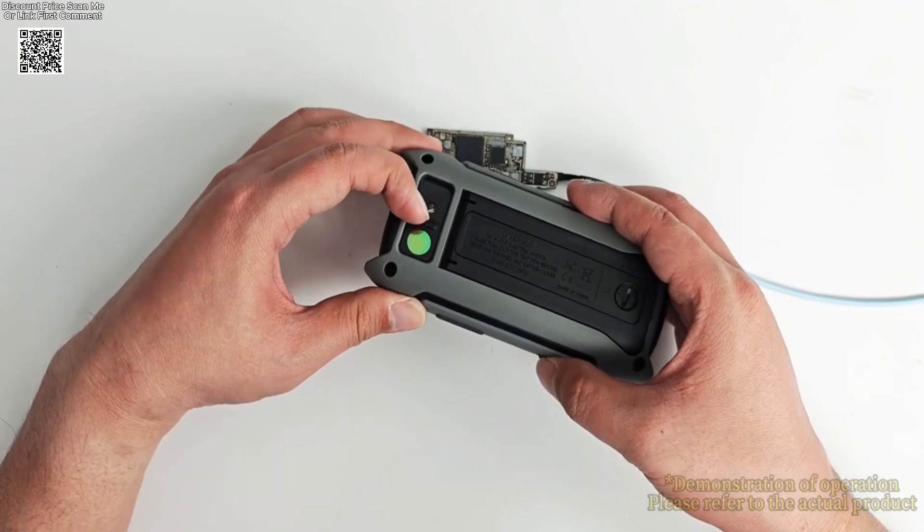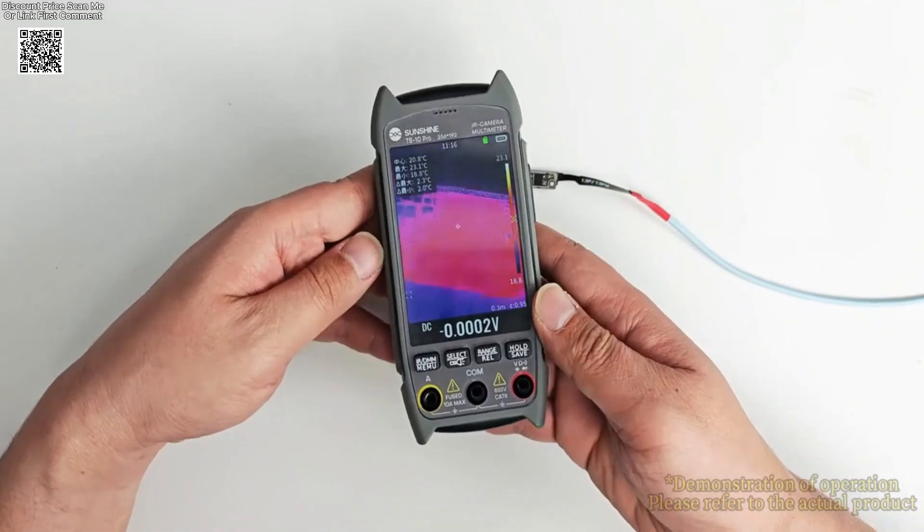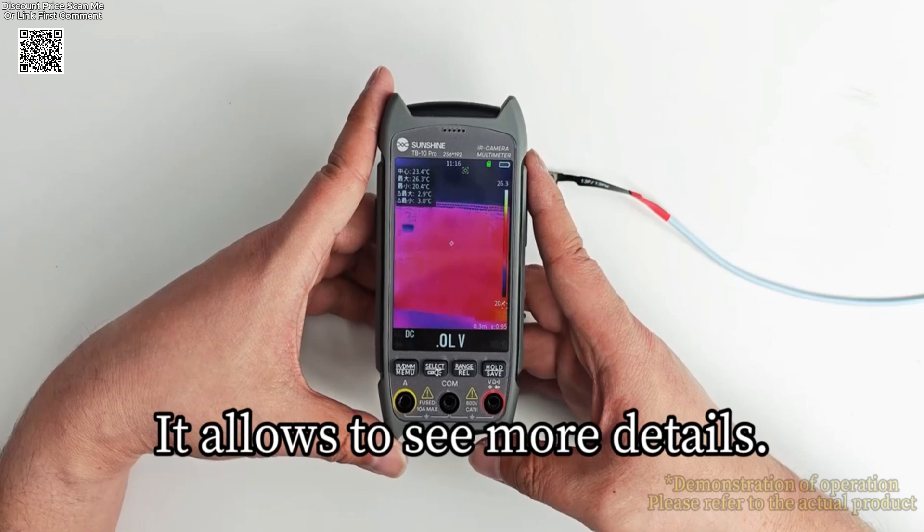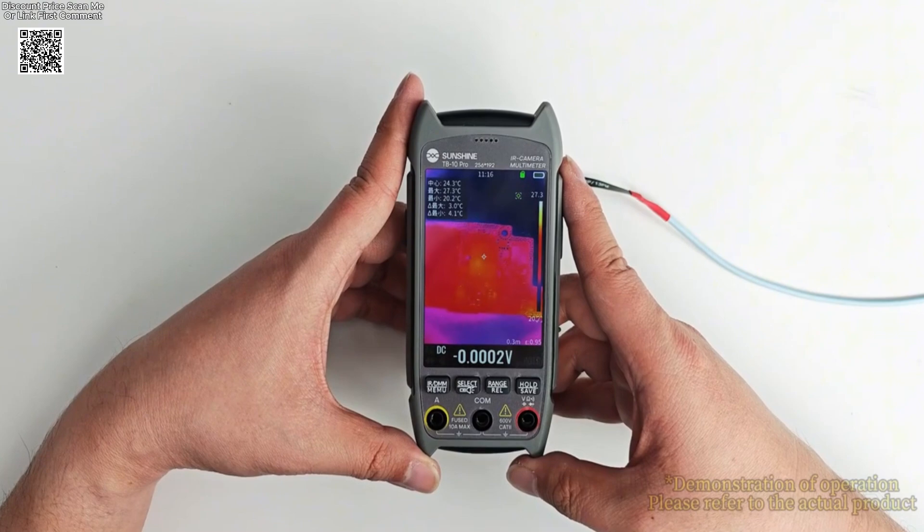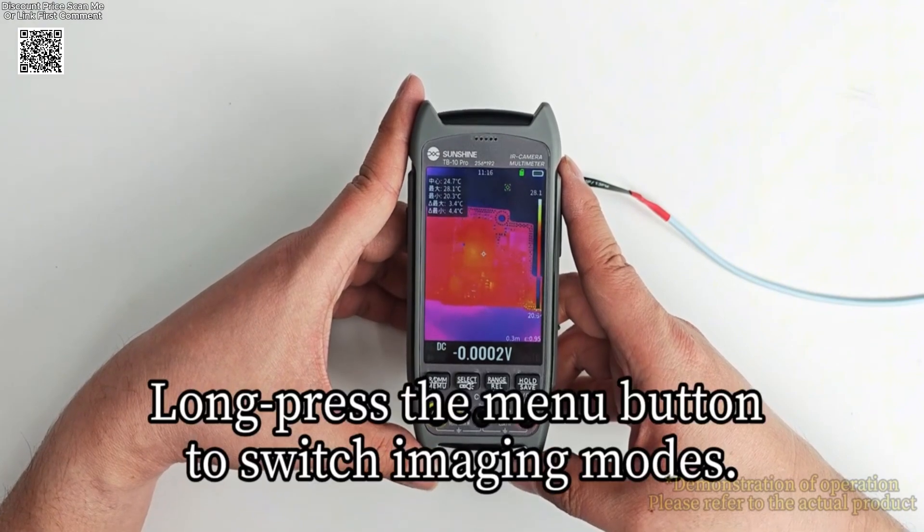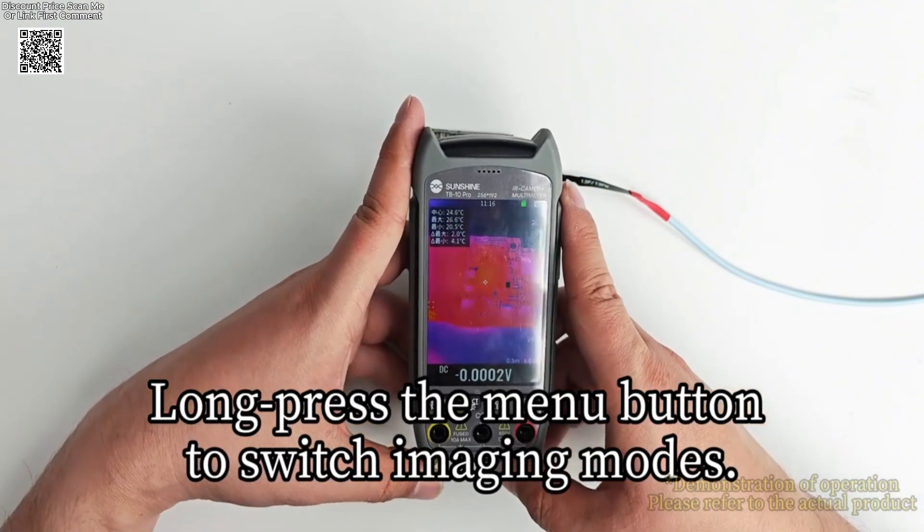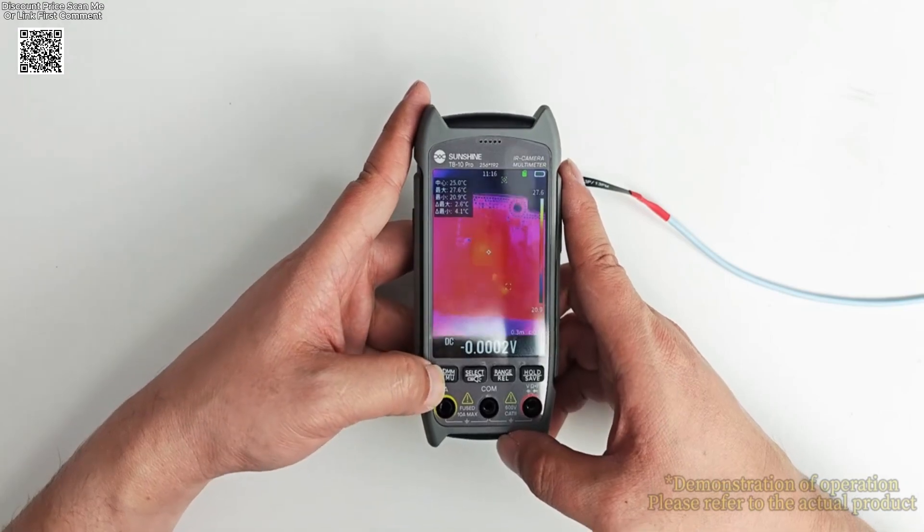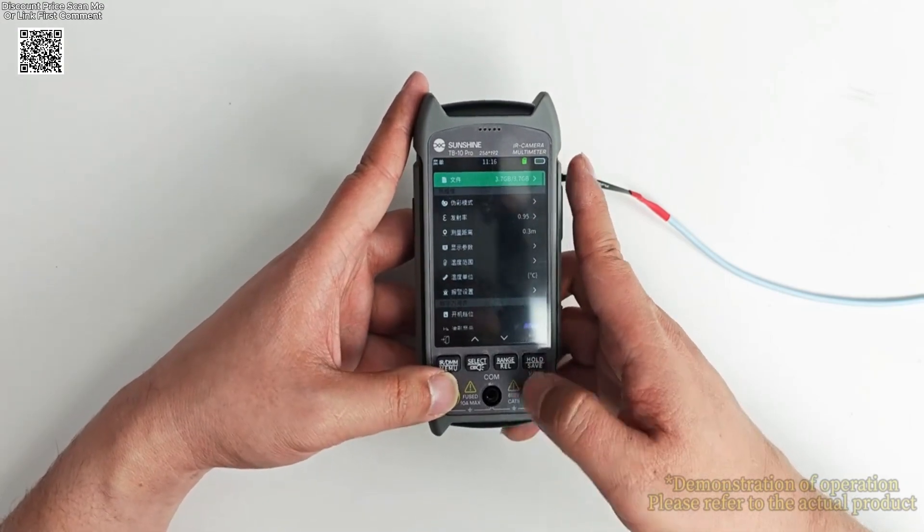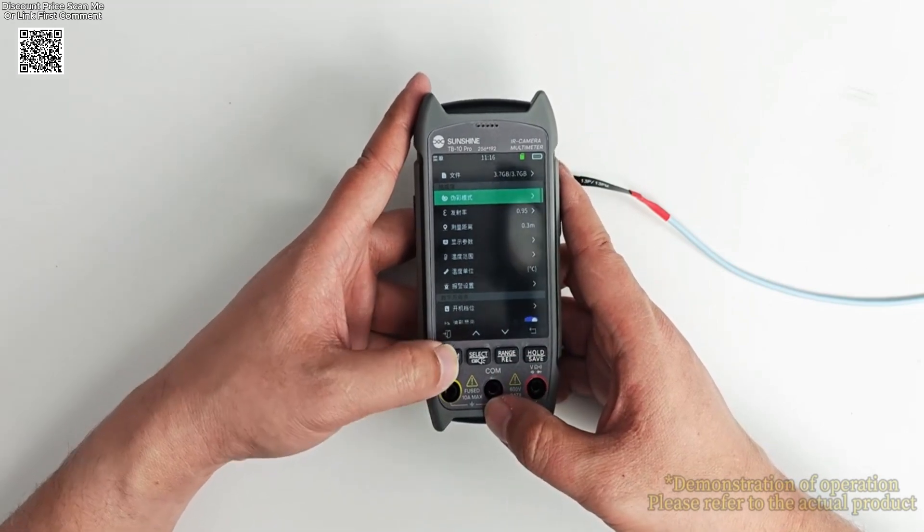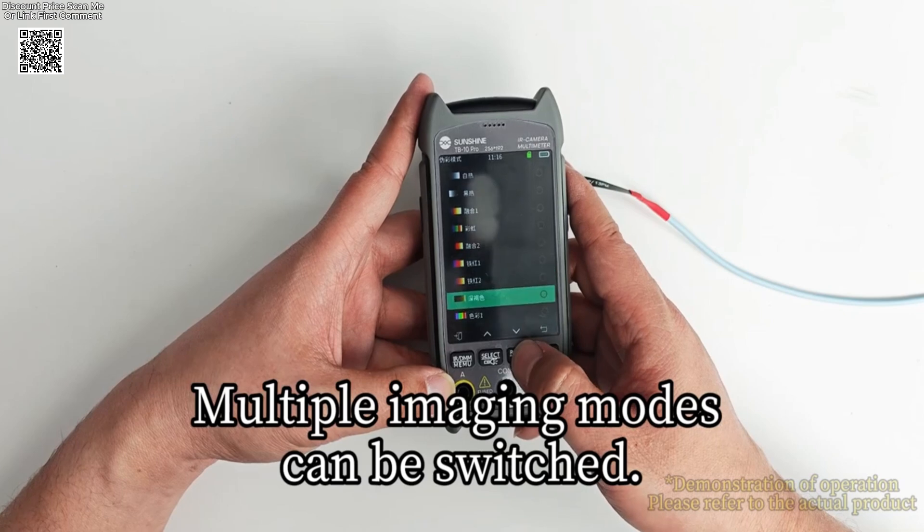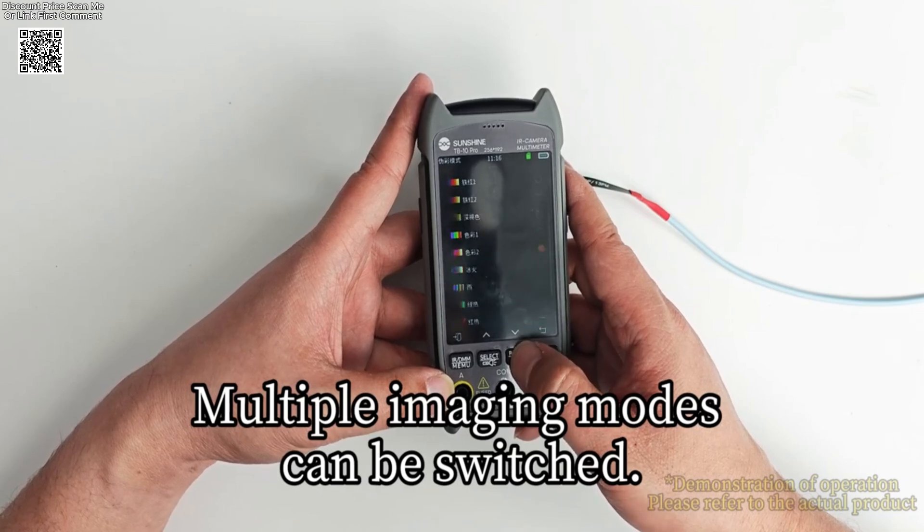The device offers high and low temperature tracking, enabling users to quickly identify cold and hot spots for rapid fault detection. With automatic gain and adjustable emissivity, 0.1 to 0.99, users can fine-tune the thermal readings for increased accuracy. The temperature measurement range spans from minus 20 degrees Celsius to plus 550 degrees Celsius, making it suitable for a wide array of applications.